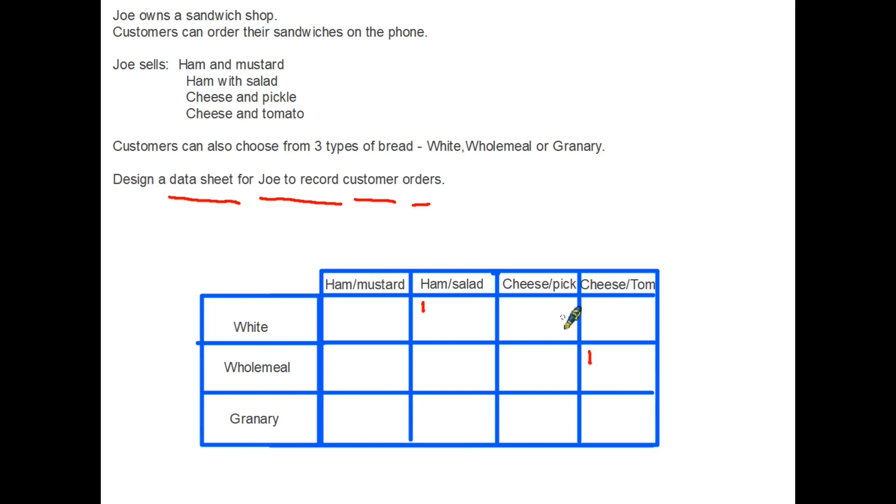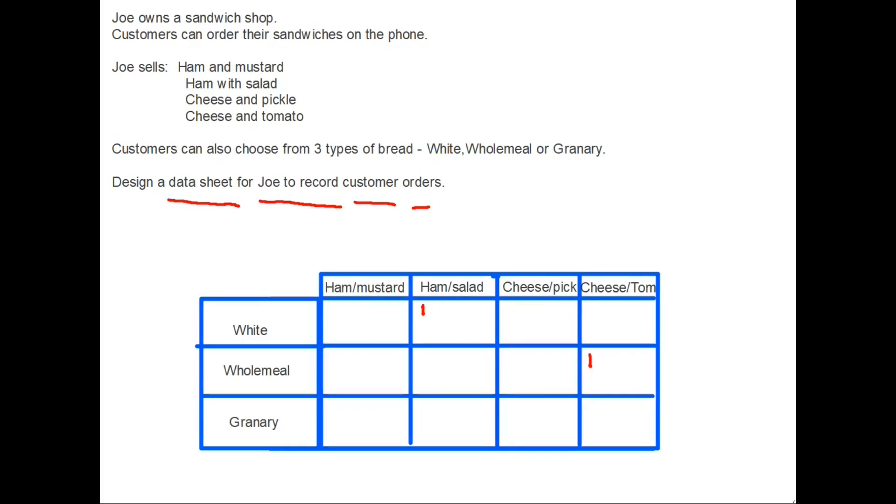So that is a data sheet for him to do it. You may have put the sandwiches down the side, the bread along the top. Your design might be slightly different to this. As long as there is what is known as an input opportunity, a chance for Joe to input the orders into the sheet, you will be fine. What I want to do next, and I'll use a different example from this one, is to consider how Joe might actually record those orders in the simplest way.